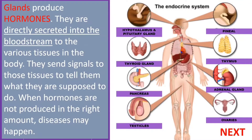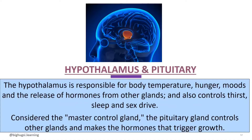The hypothalamus is responsible for the regulation of body temperature, hunger, mood, and the release of hormones from other glands. It also controls thirst, sleep, and the sex drive. The pituitary gland is considered the master control gland. It controls other glands and makes the hormones that trigger growth.